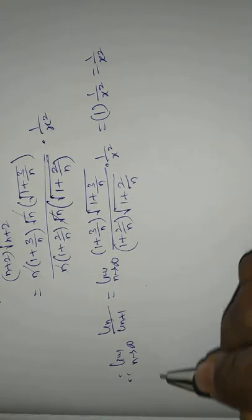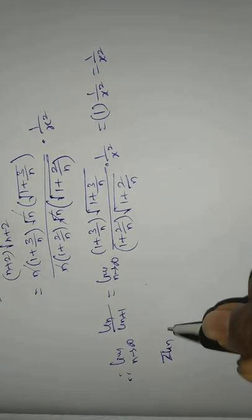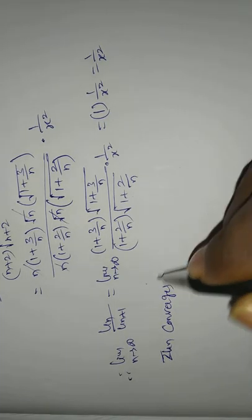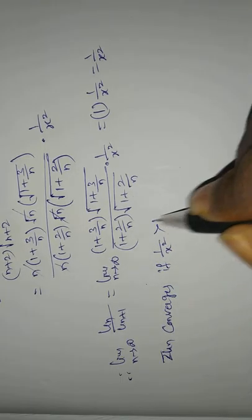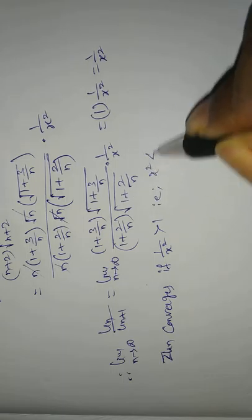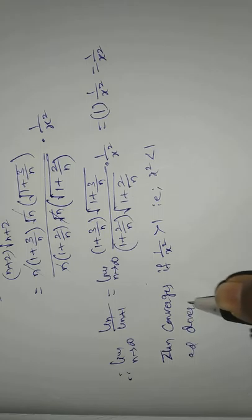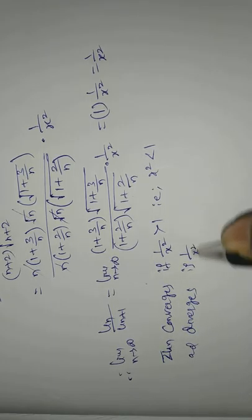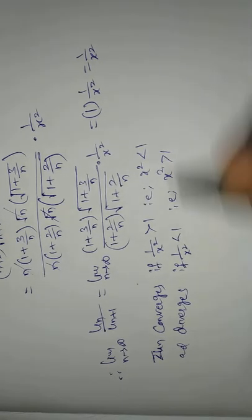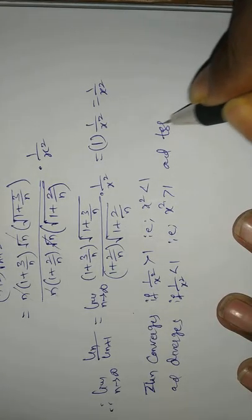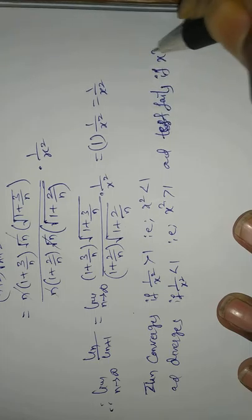By the Ratio Test, summation U_n converges if 1/x² > 1, that is x² < 1, and diverges if 1/x² < 1, that is x² > 1. The test fails when x² = 1.